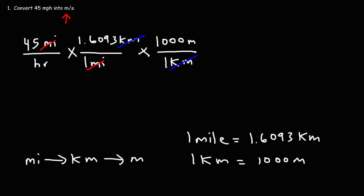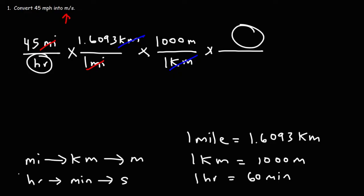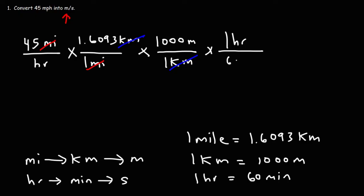The next thing we need to do is change hours into seconds. We're going to convert hours to minutes, and then minutes to seconds. We know that one hour is equal to 60 minutes. Notice that we have the unit hours on the bottom, so we're going to put that same unit on top — this part of the conversion factor goes on top, and the 60 minutes goes on the bottom. So now we can cross out the unit hours.